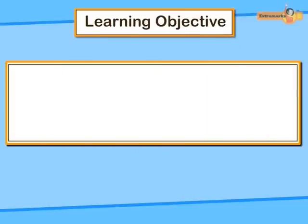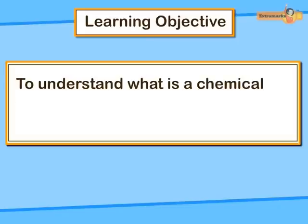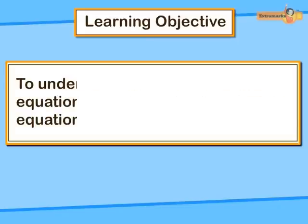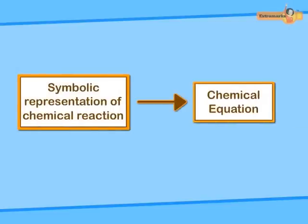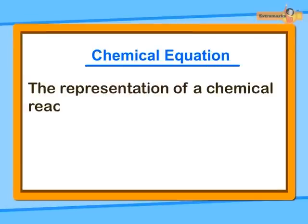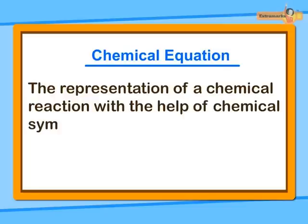This animation will help us to understand what is a chemical equation and how to write a chemical equation. A chemical equation is the symbolic representation of a chemical reaction, the representation of a chemical reaction with the help of chemical symbols.